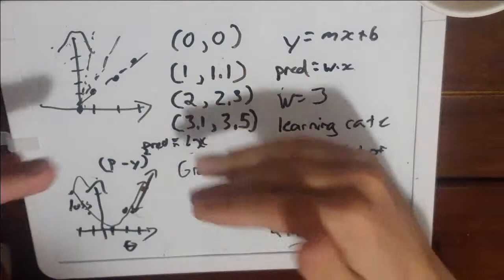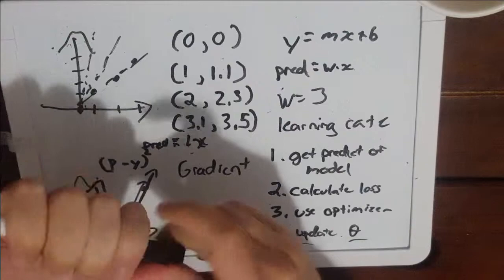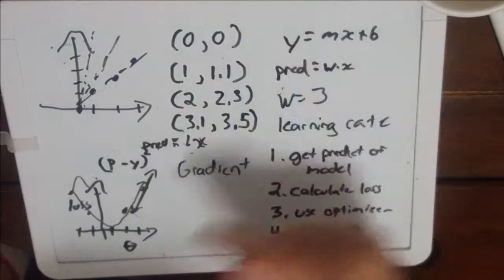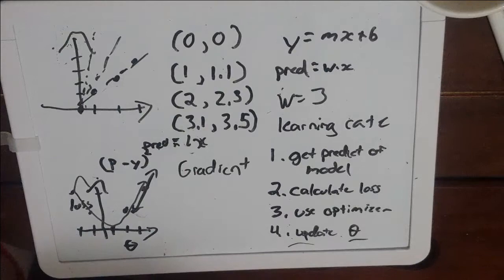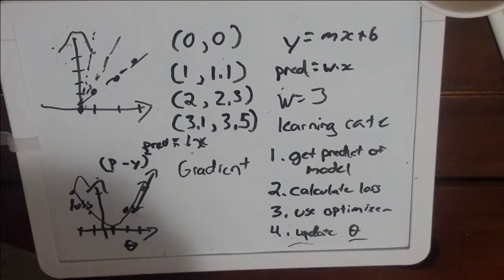Now neural nets are going to be a little more complicated. Right now we're only working with one parameter. You can even have hundreds of thousands of parameters, so it's going to scale up but the logic of this kind of continues through and a lot of the math kind of scales up as well.